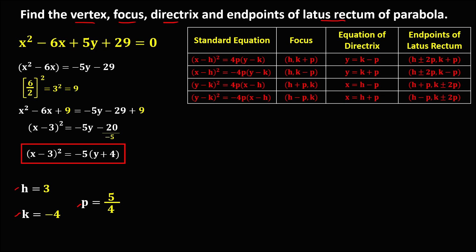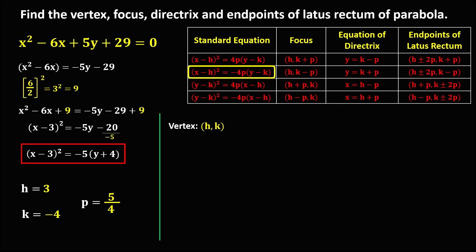Observe that from this standard equation, we have x-cords — these are the possible formulas. This coefficient is negative 5, or negative 4p, so these are the formulas to find the focus, equation of directrix, and endpoints of the latus rectum. To find the vertex: the vertex of a parabola is (h, k). Substituting, h is positive 3 and k is negative 4, so the vertex is (3, negative 4).